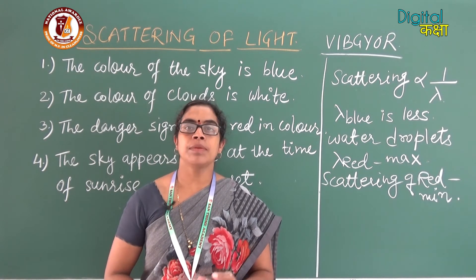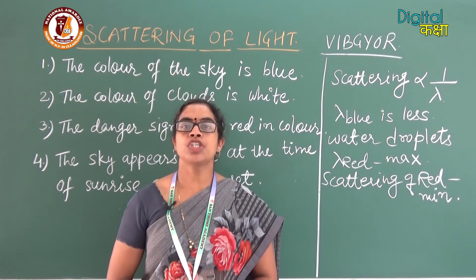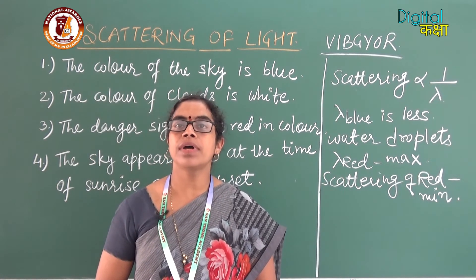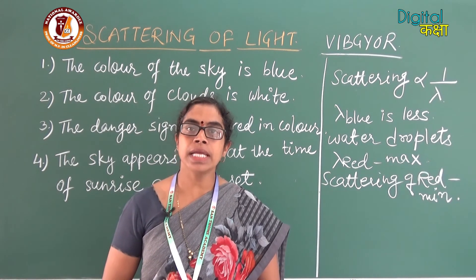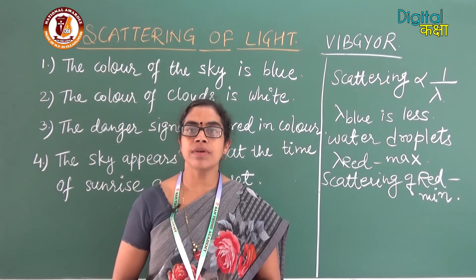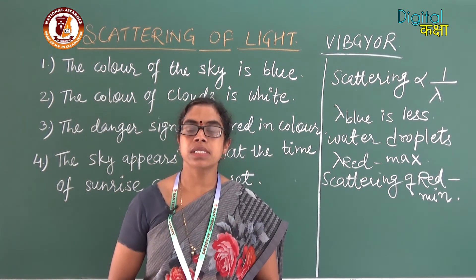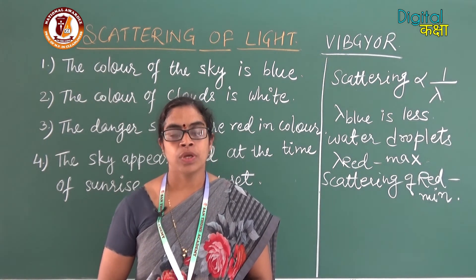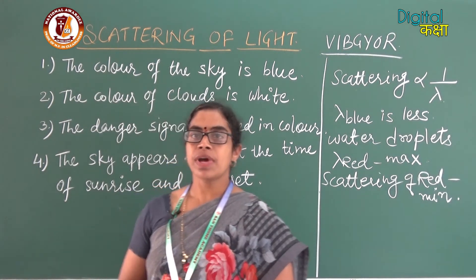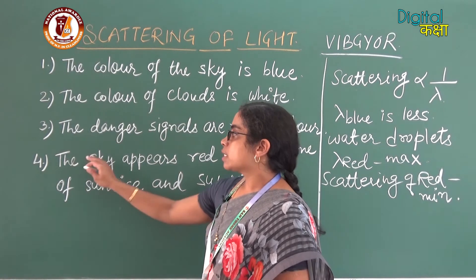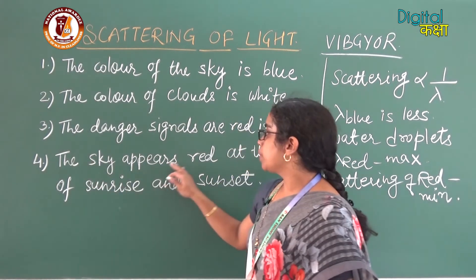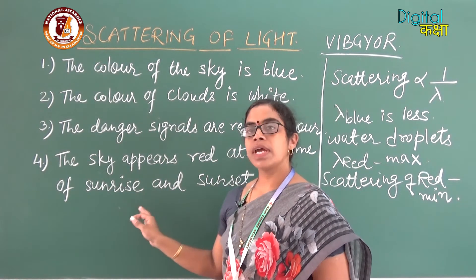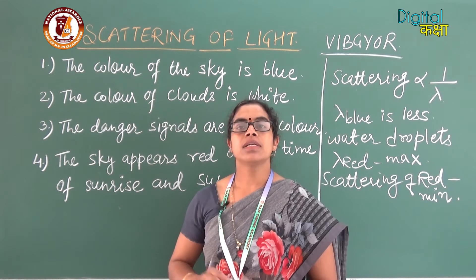During noon time, the position of the sun is directly overhead, so the sunlight has to travel a shorter distance. That is why the sky specifically appears red only at the time of sunrise and sunset, and not during noon.